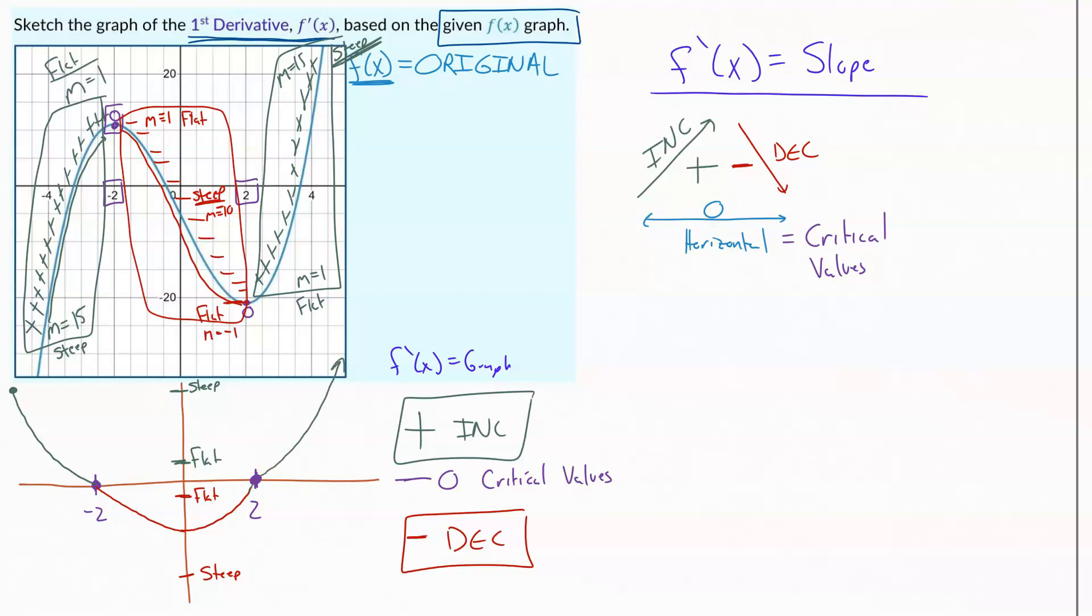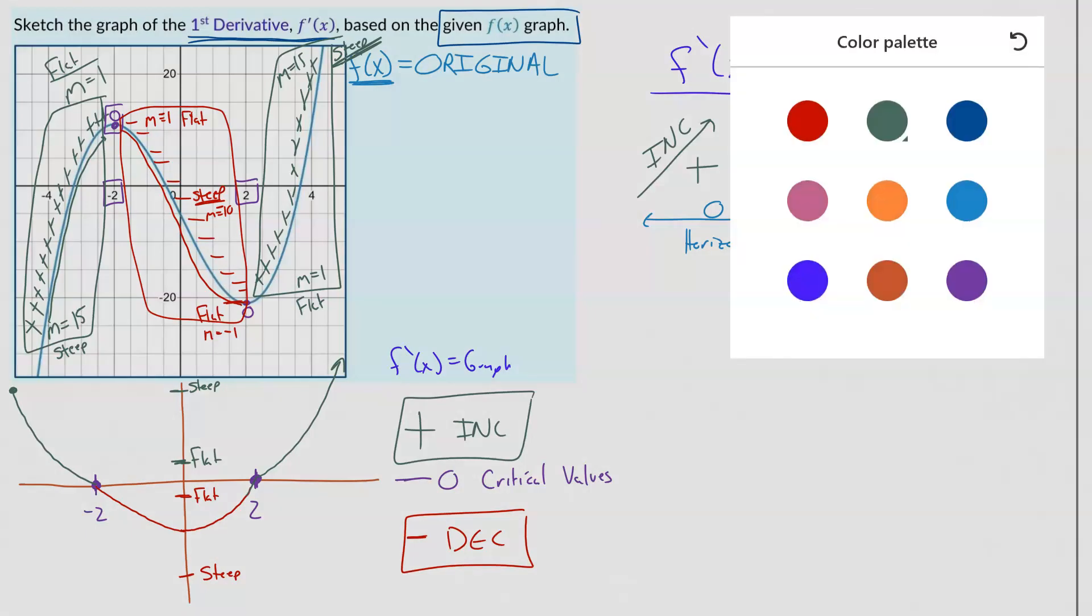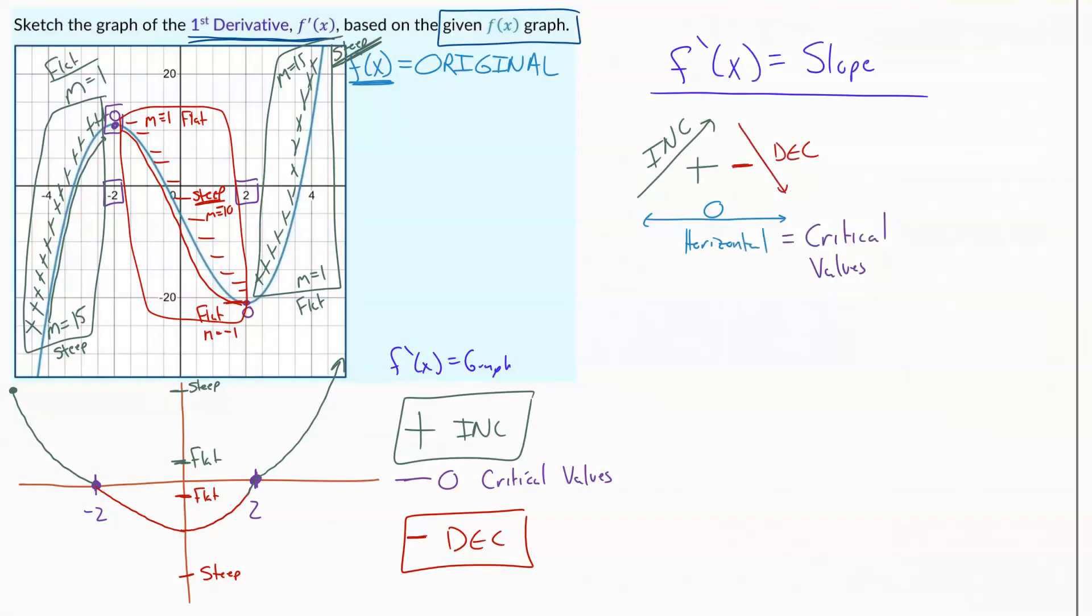So we start flat and we go steep. So our graph is going to look something like that. Not the prettiest looking graph, but once you sketch it, you can come back through and make it look nicer if you want to.